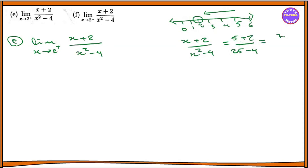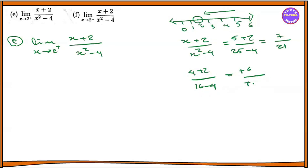Continuing the evaluation of x plus 2 by x squared minus 4 as x approaches 2 from the right — the numerator approaches 4 and the denominator approaches 0 from the positive side. The values grow without bound toward plus infinity.